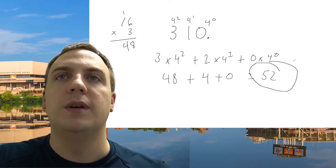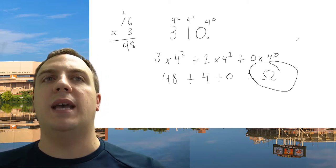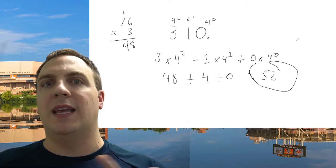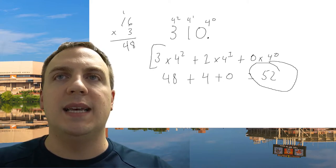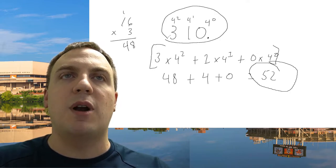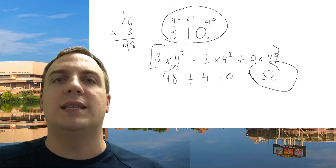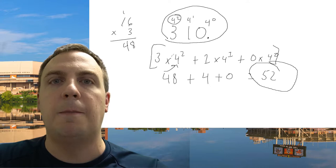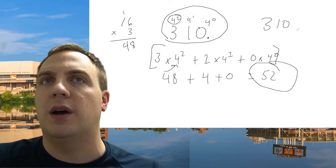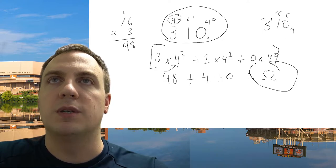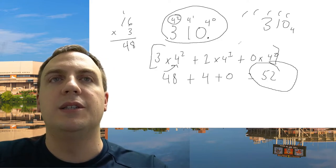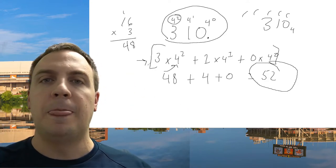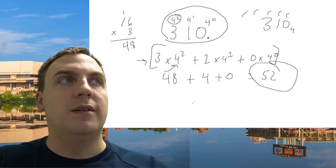We get the answer in base 10 because we're using base 10 multiplication and addition. The number 52 is the exact same value as 310 in base four — just a different representation. When we write 310 in base four, we know this is the ones place, the fours place, and increasing powers moving left. Breaking it out explicitly just shows what we're multiplying each digit by.